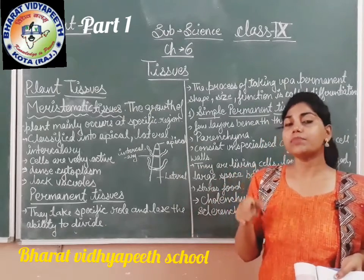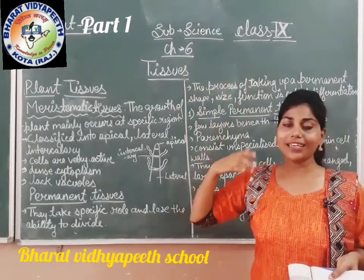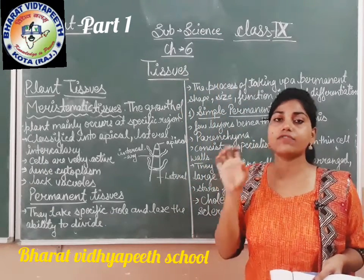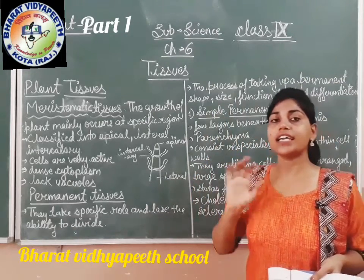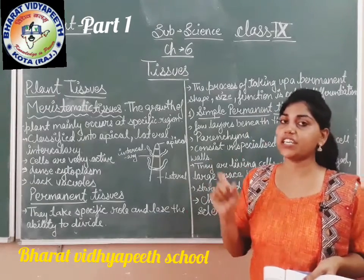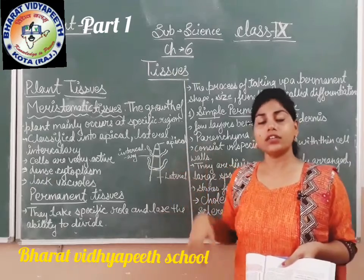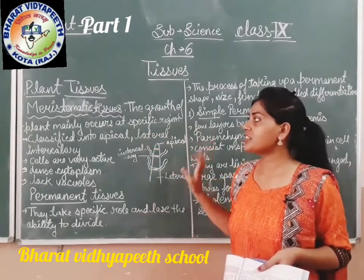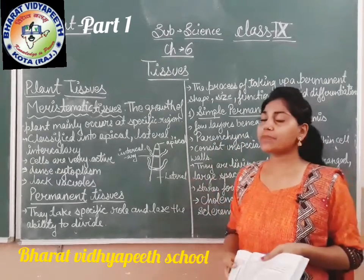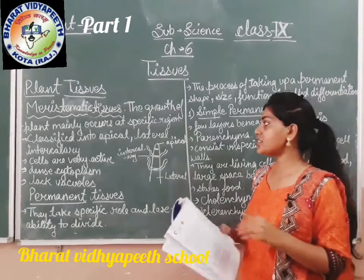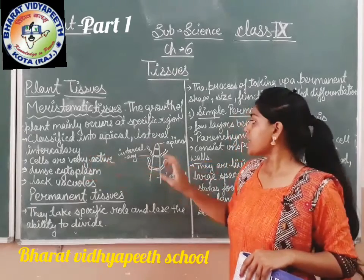A plant mainly develops from its height area and its roots area. The uppermost and the lowermost areas from which a plant develops are known as meristematic tissue, which helps the plant to grow above the ground and under the ground. Meristematic tissue is mainly divided into three parts: apical, lateral, and intercalary tissues.